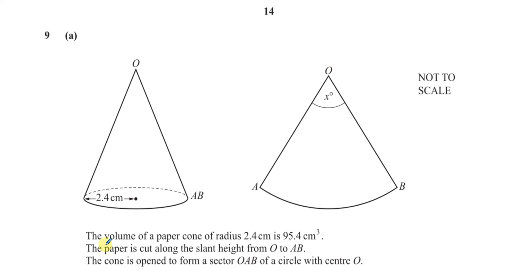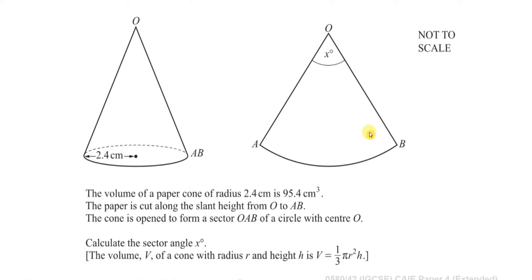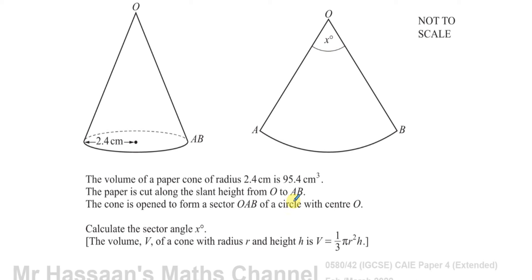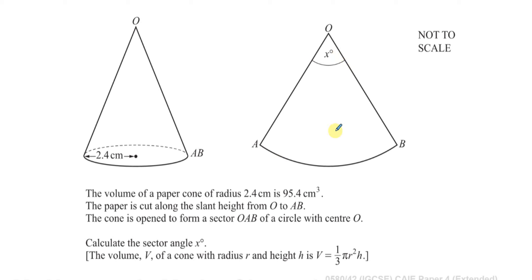Question 9 part A is about a cone which has been opened up to make the net of the solid. The paper cone was slit along the line O to AB and opened up and flattened out to form this sector. We need to find the sector angle X. We know the volume of the cone is 95.4 cm³ and the radius of the base of the cone is 2.4 cm.